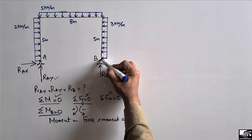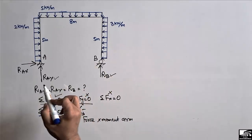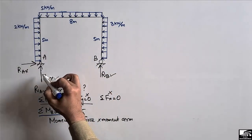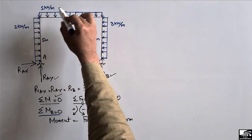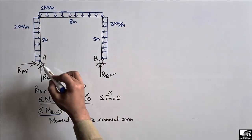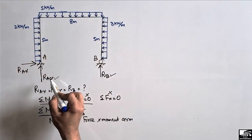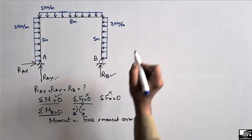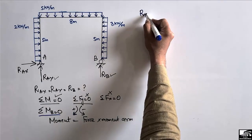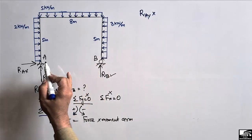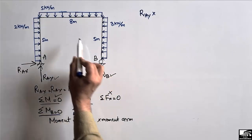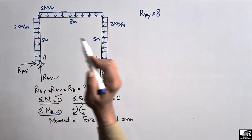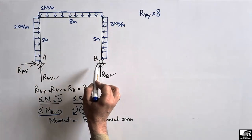Taking summation of moments at point B equal to zero: RAY acts in the upward direction, which creates a clockwise moment about point B, so it is positive. RAY multiplied by its moment arm — the horizontal distance from A to B — which is 8 meters.